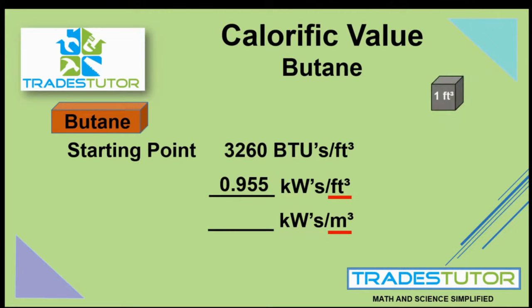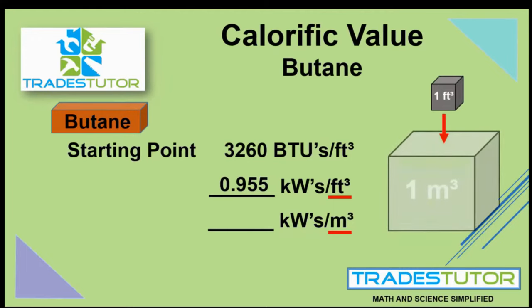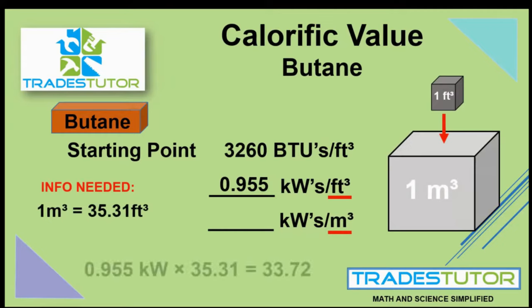But how much would we have in a cubic meter? Well, a cubic meter is a lot bigger. In fact, it turns out it's 35.31 times bigger than a cubic foot. So we would take our number of 0.955 kilowatts.